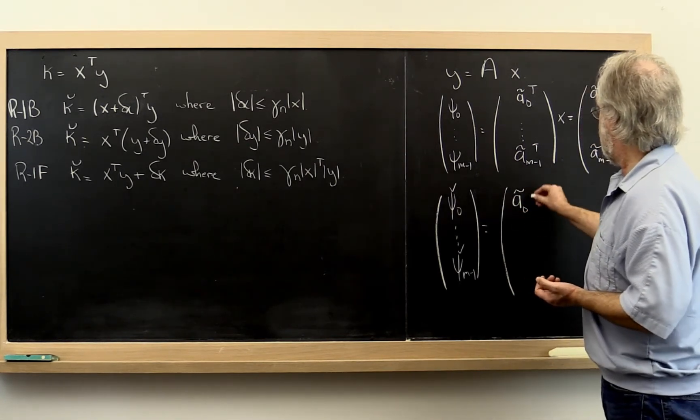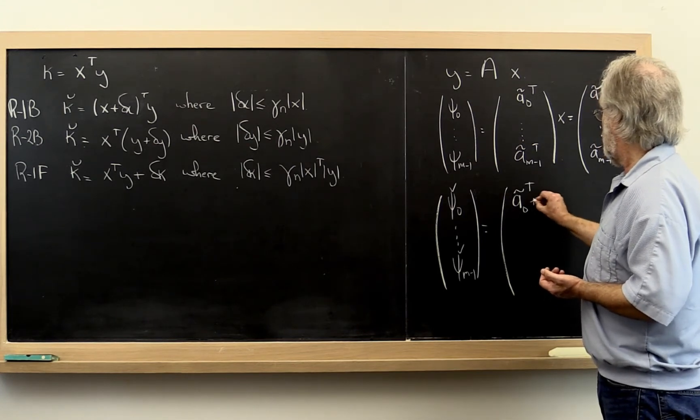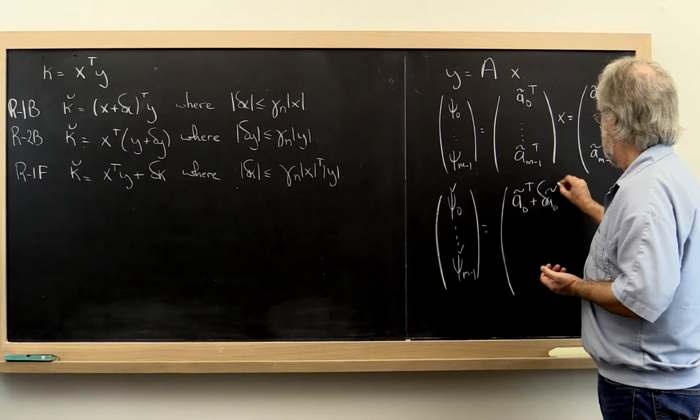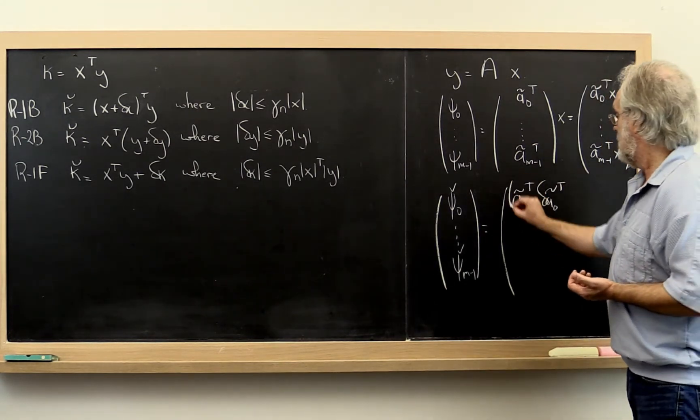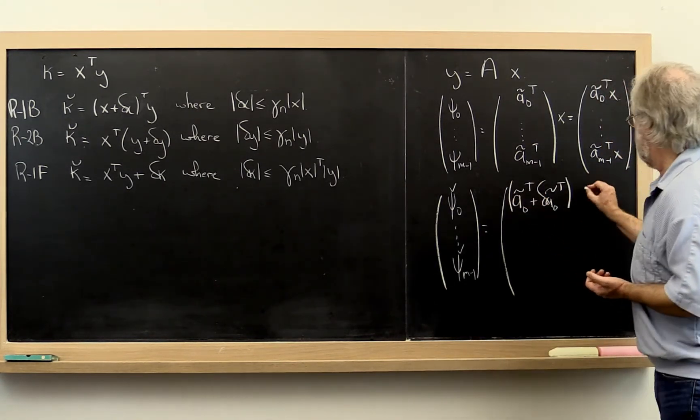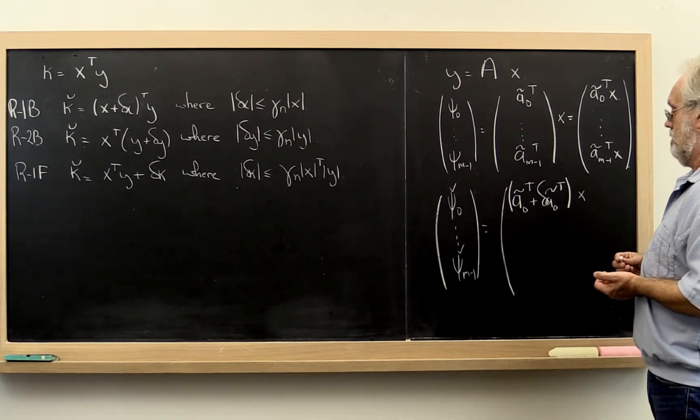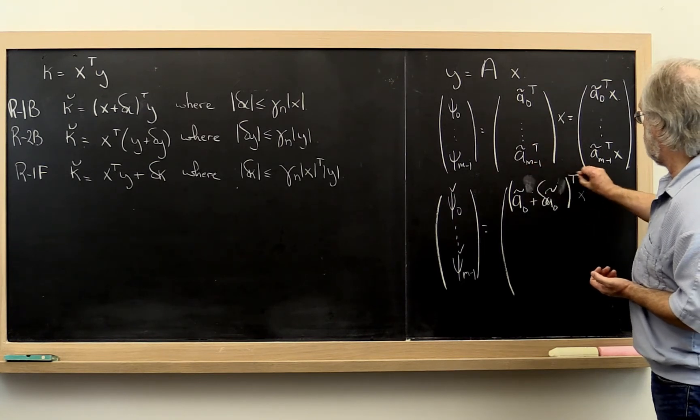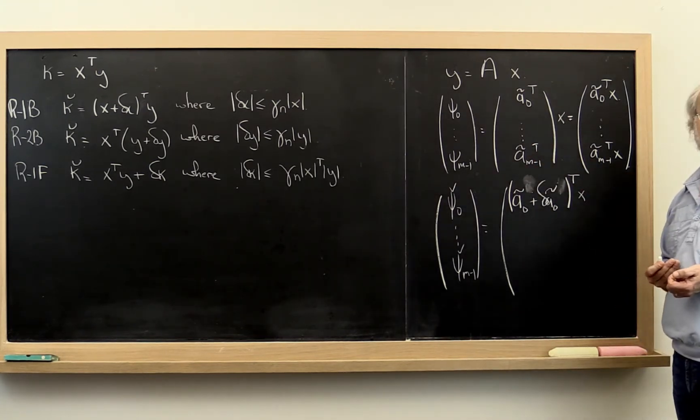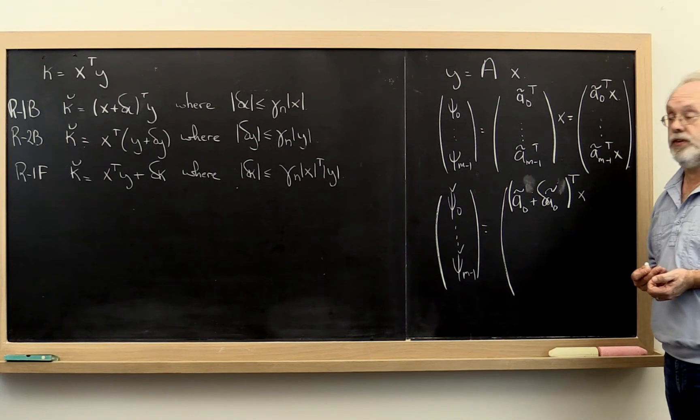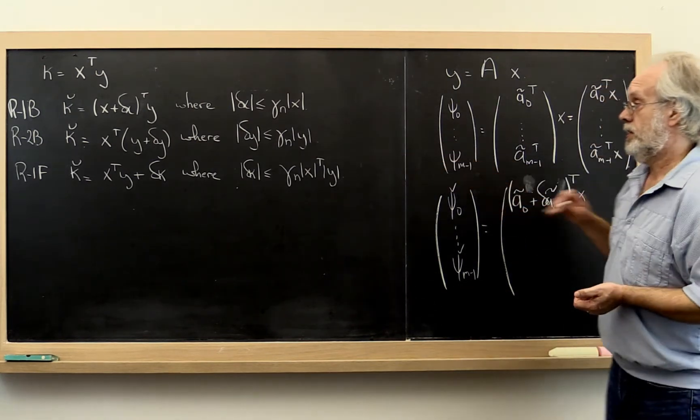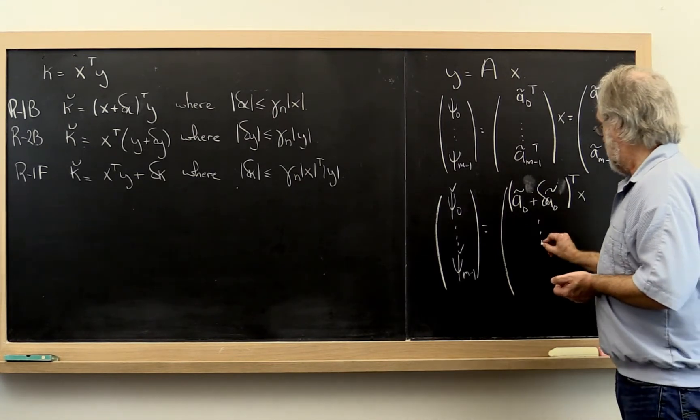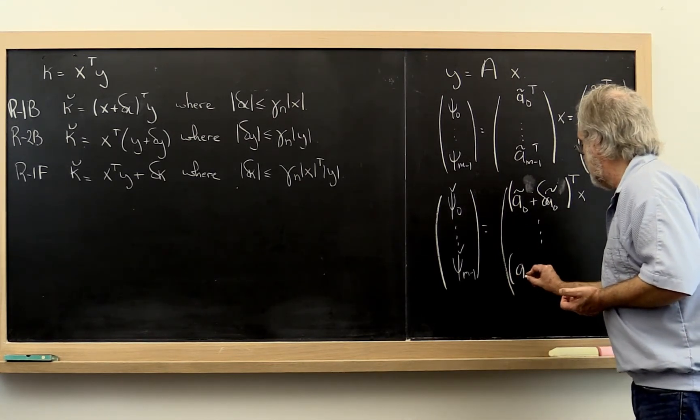A zero to which we now have to add a small change, which is a vector, and we multiply that times the vector x. Now obviously what we can do is we can make it even more explicit by taking these transposes and putting them right there. And that makes it easier to see what the corresponding results over here are. And we do that for every row.